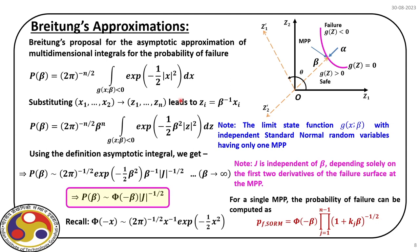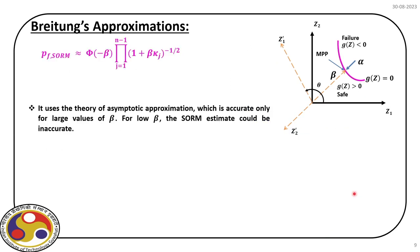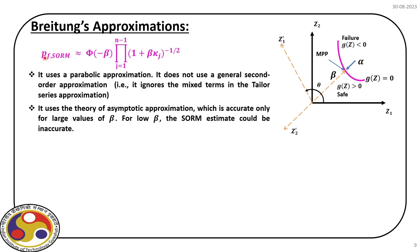With a single MPP, the probability of failure can be further simplified using the Jacobian expression derived from the asymptotic integral. The final expression for probability of failure as per second order reliability method has: the first part phi(-beta) from first order reliability method, and a correction term to incorporate the curvature of the nonlinear limit state function.